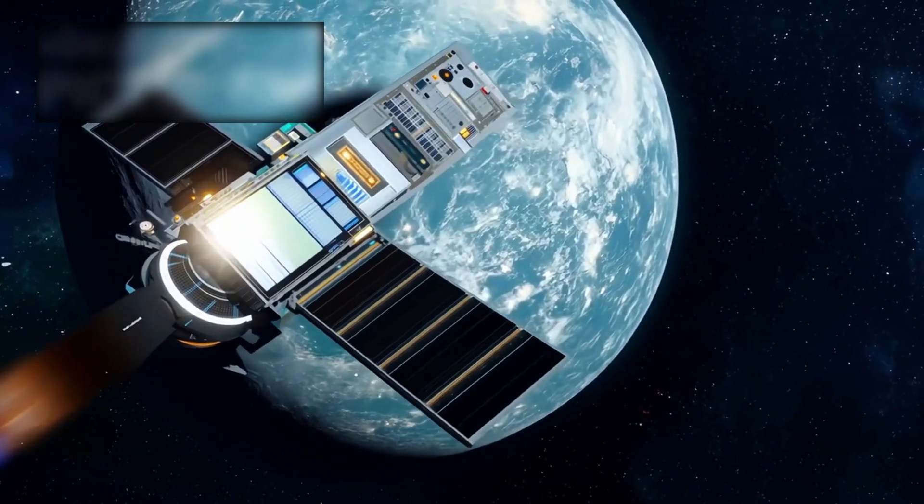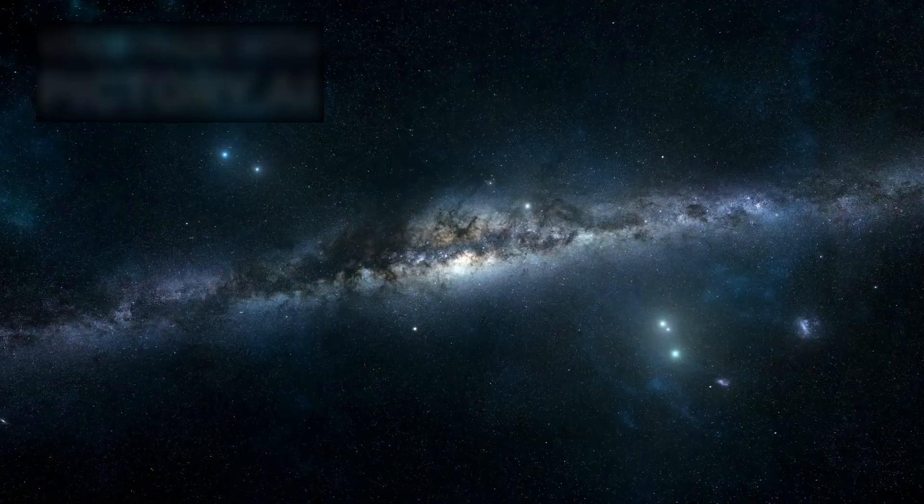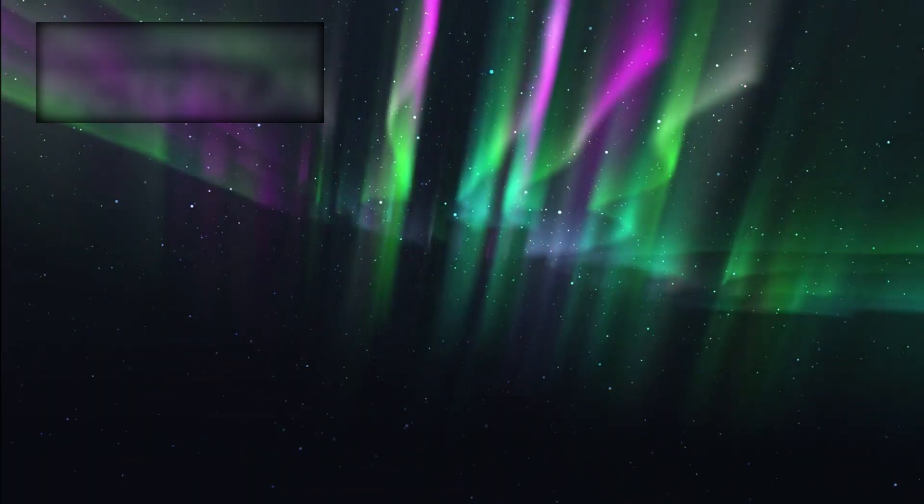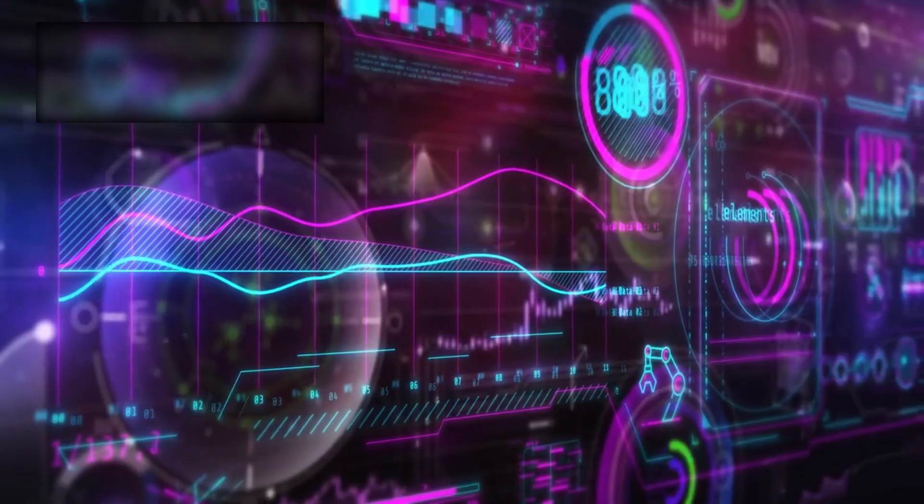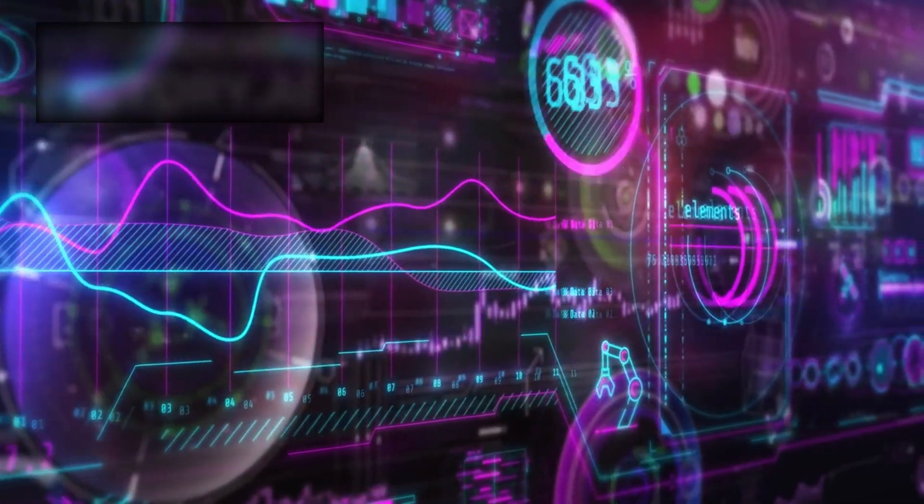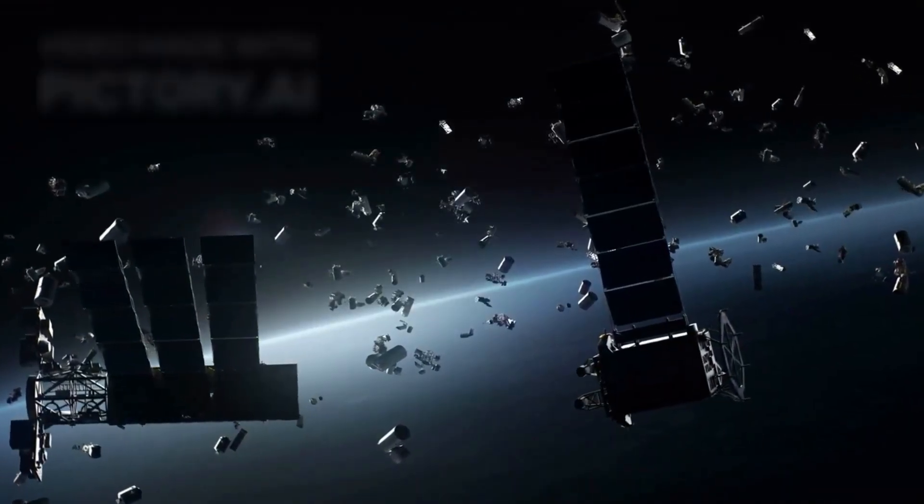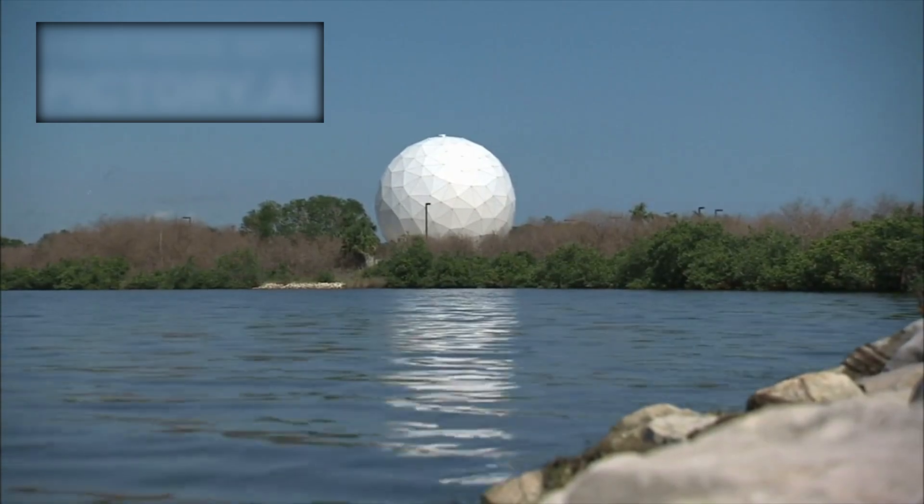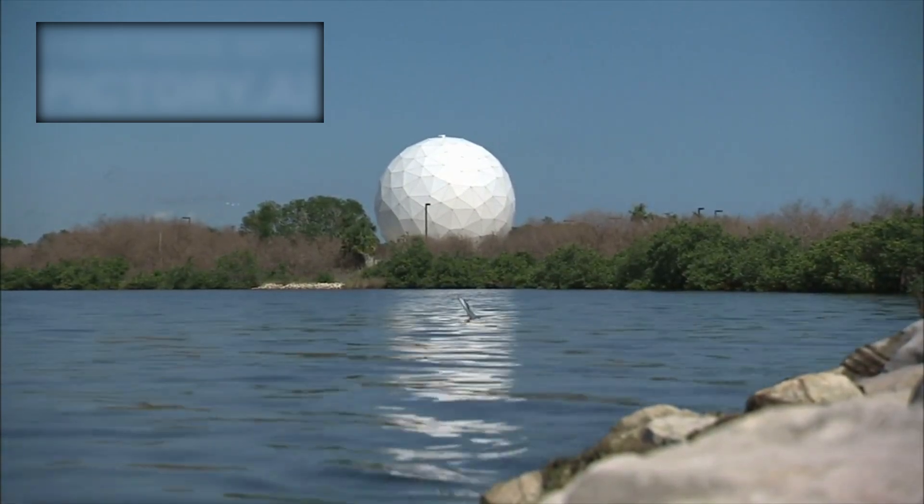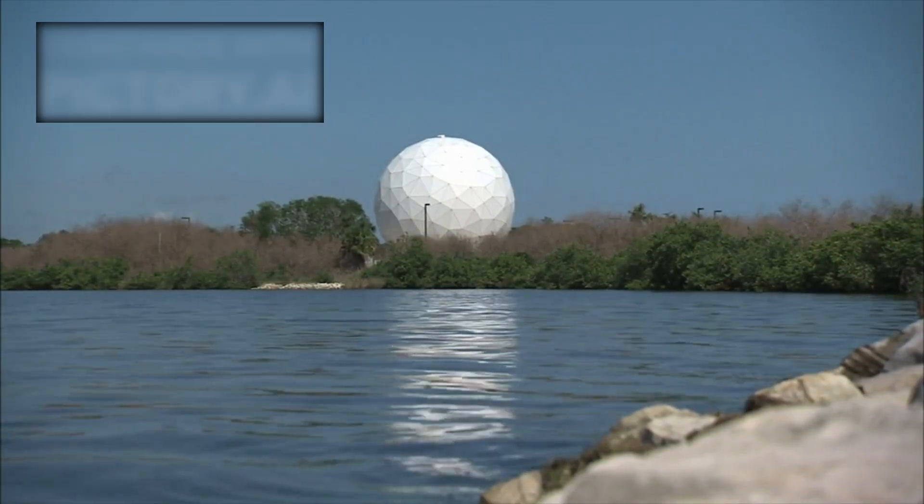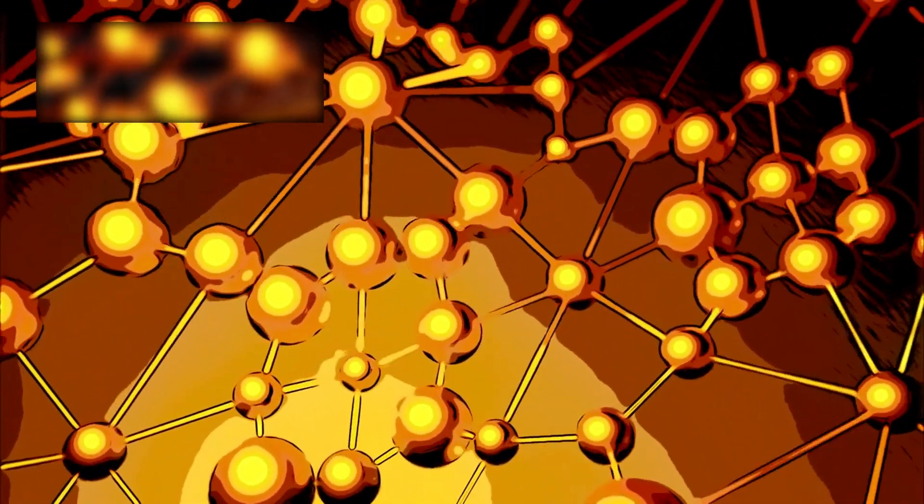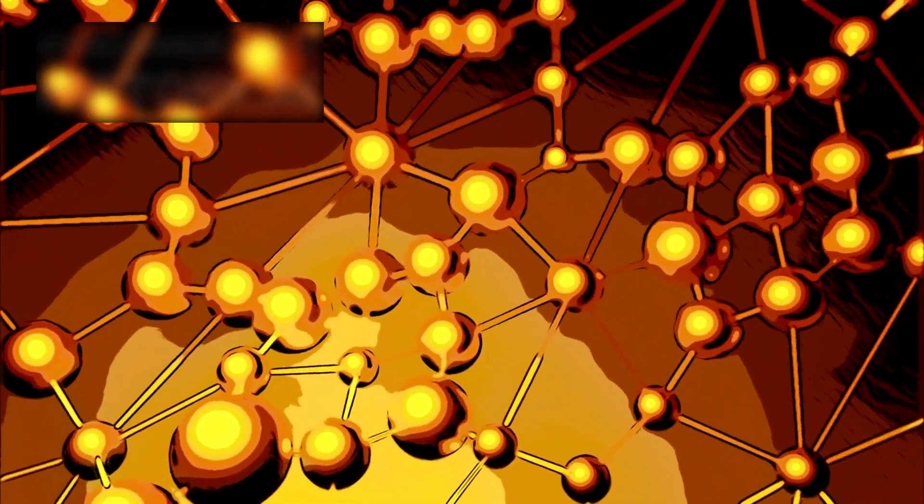But Voyager 2 did not fade. It endured. And recently, against all odds, it sent something back. Not just ordinary data, not a routine transmission. What it sent was a message that made NASA scientists pause—a sudden spike, an unexpected shift, a clear line that was crossed. And with that line came confirmation of something humanity had always feared but never dared to say out loud.